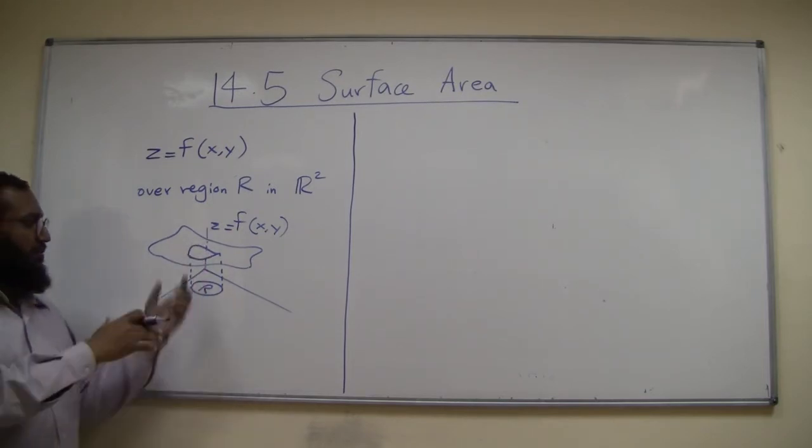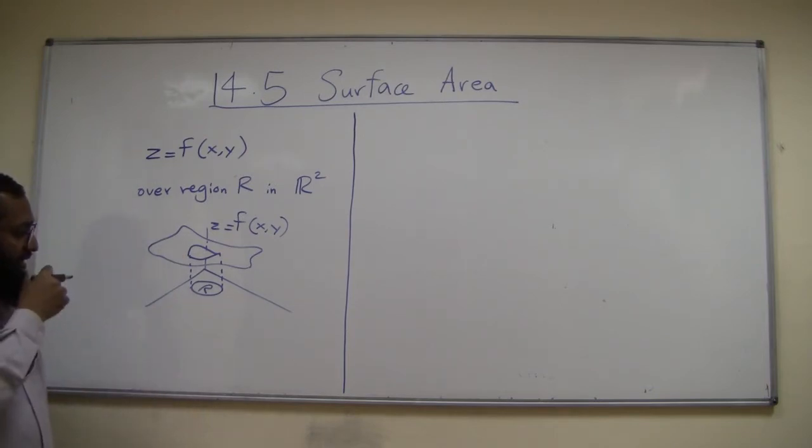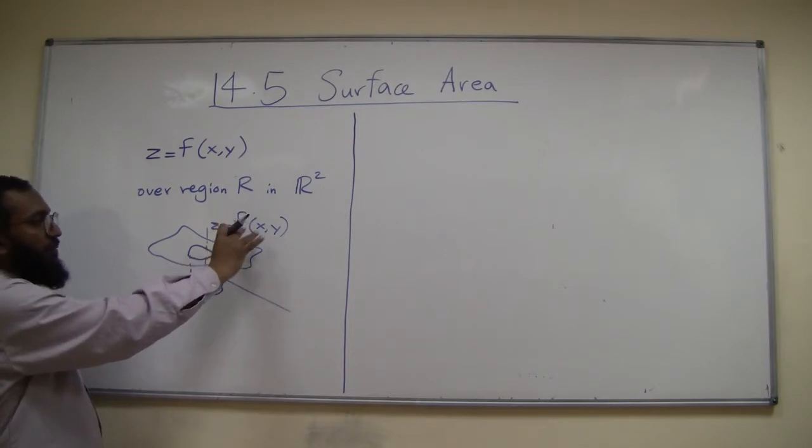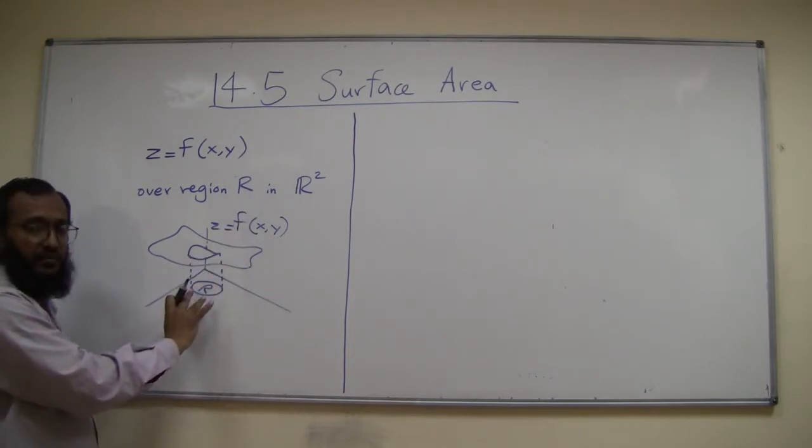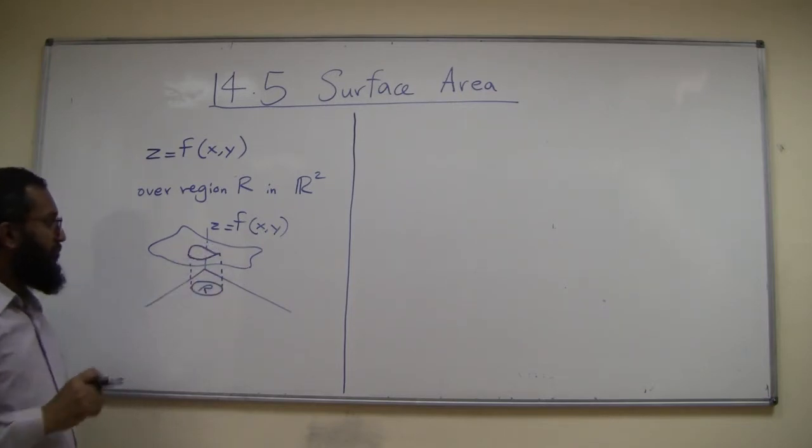It looks something like this depending on how the surface of the area is. So we have already seen when we do double integral of f, the double integral of f over the region R will calculate the volume of this solid.